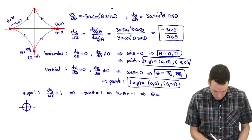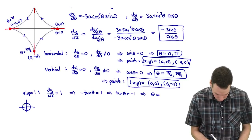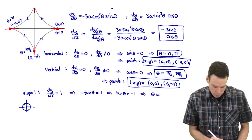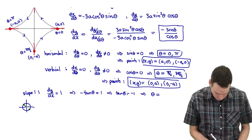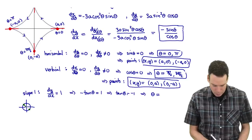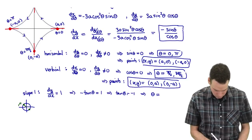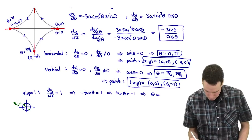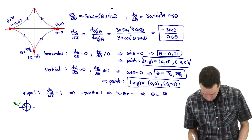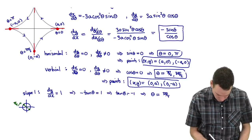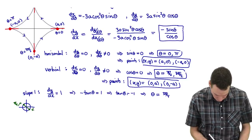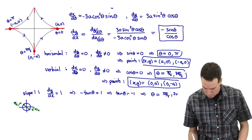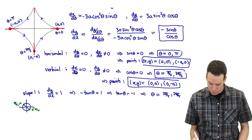Drawing a little unit circle picture: the tangent is −1 at two angles. The reference angle is π/4, so one angle is π minus π/4, which is 3π/4. The other one in the lower quadrant can be thought of as 2π minus π/4, which is 7π/4. So those are the two theta values.